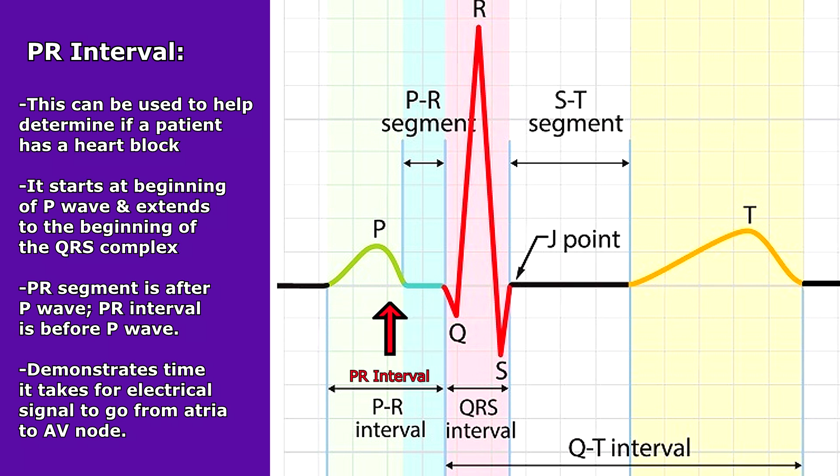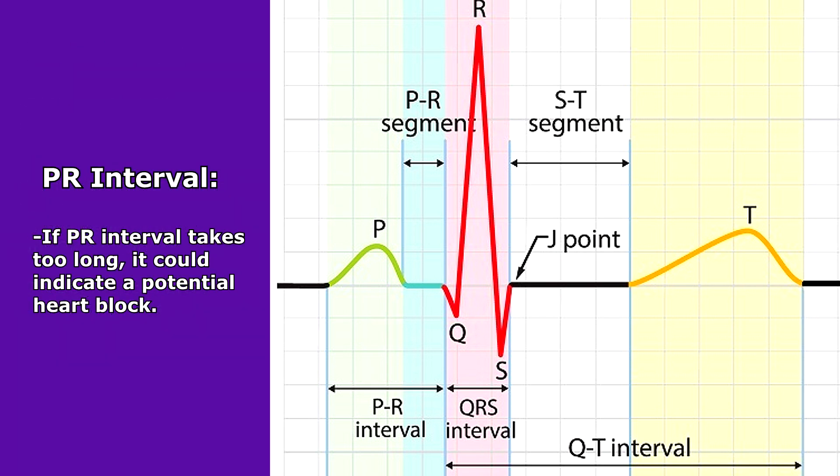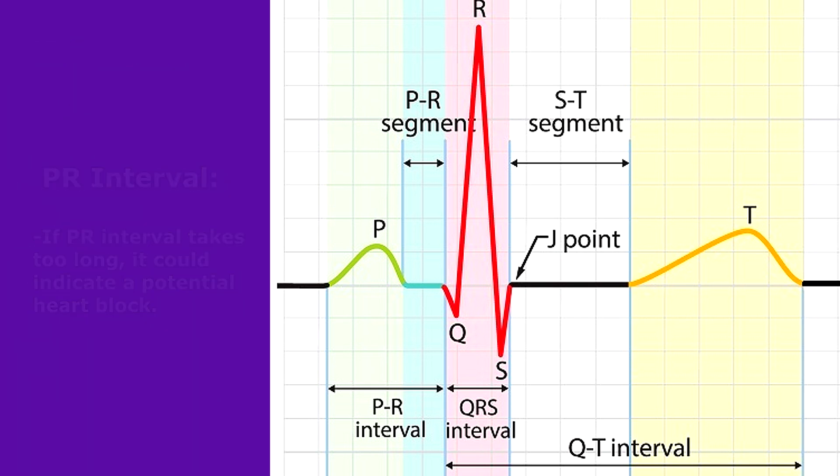The PR interval demonstrates the amount of time it takes for the electrical signal to go from the atria to the AV node. If it's taking too long — if we have a long PR interval — this could indicate a heart block.